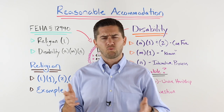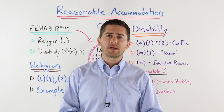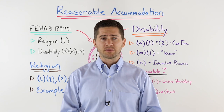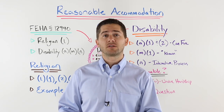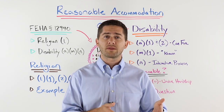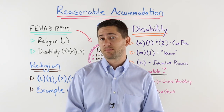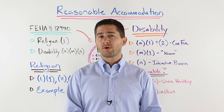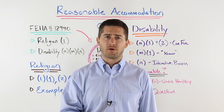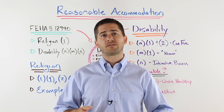For purposes of this reasonable accommodation video, it's all about people with disabilities and people who are religious. In essence, an employer is not allowed to discriminate against somebody who is disabled. However, some people who are disabled have limitations in what they can physically do, and sometimes those limitations come into conflict with the essential functions of the job. A reasonable accommodation is when the employer slightly tweaks the job function for that employee so they can perform the essential functions of the job.